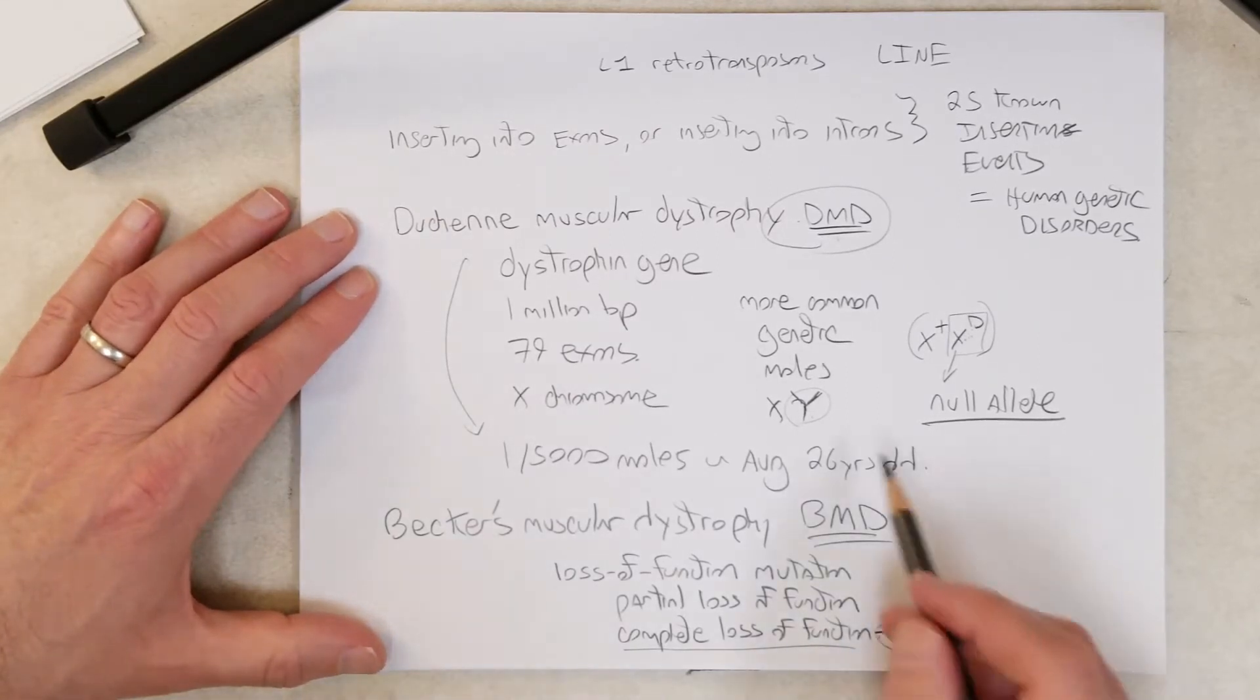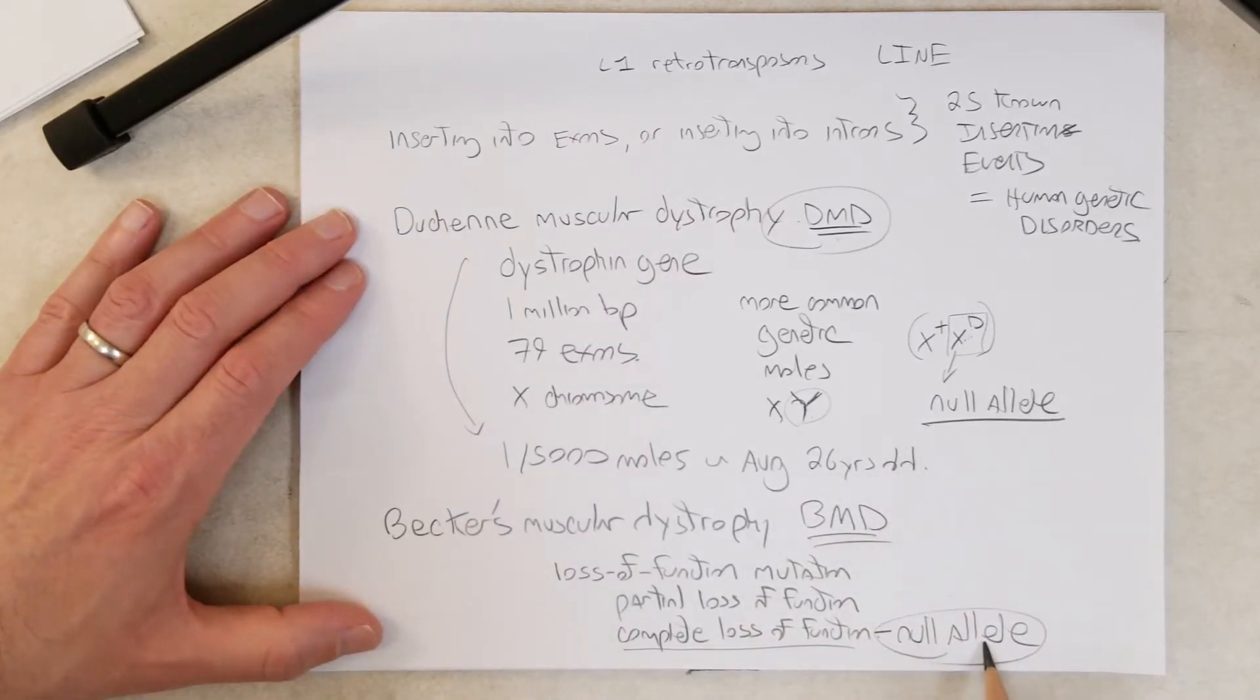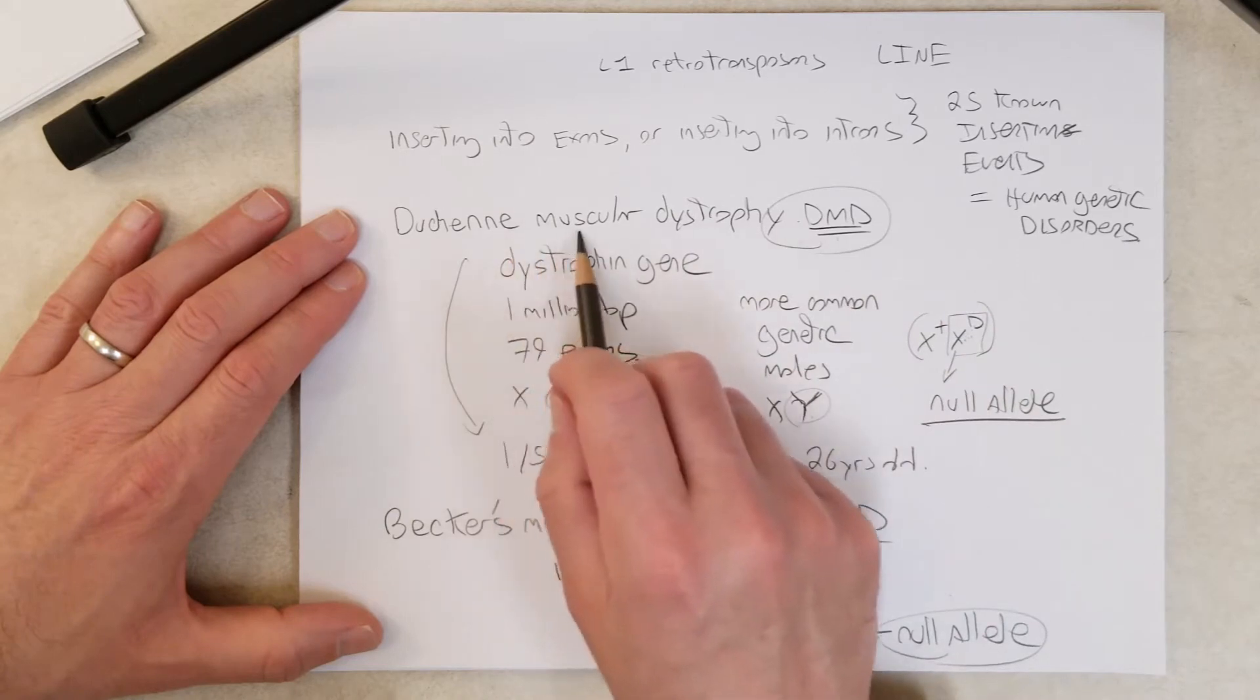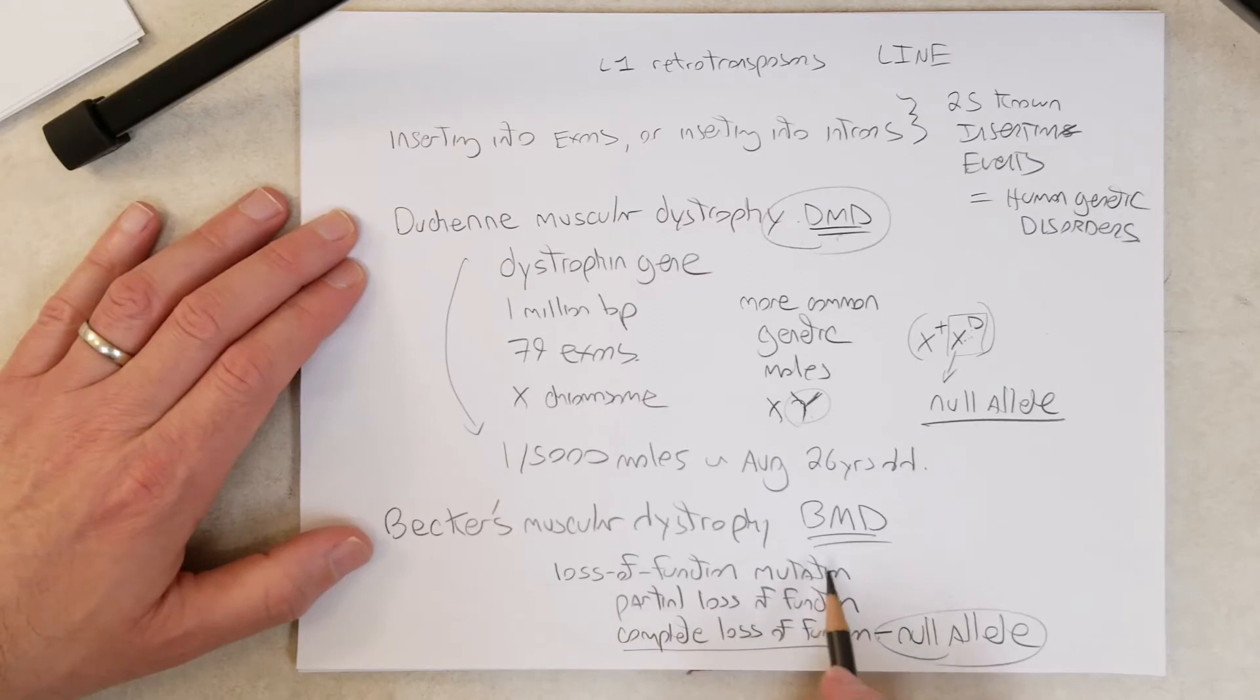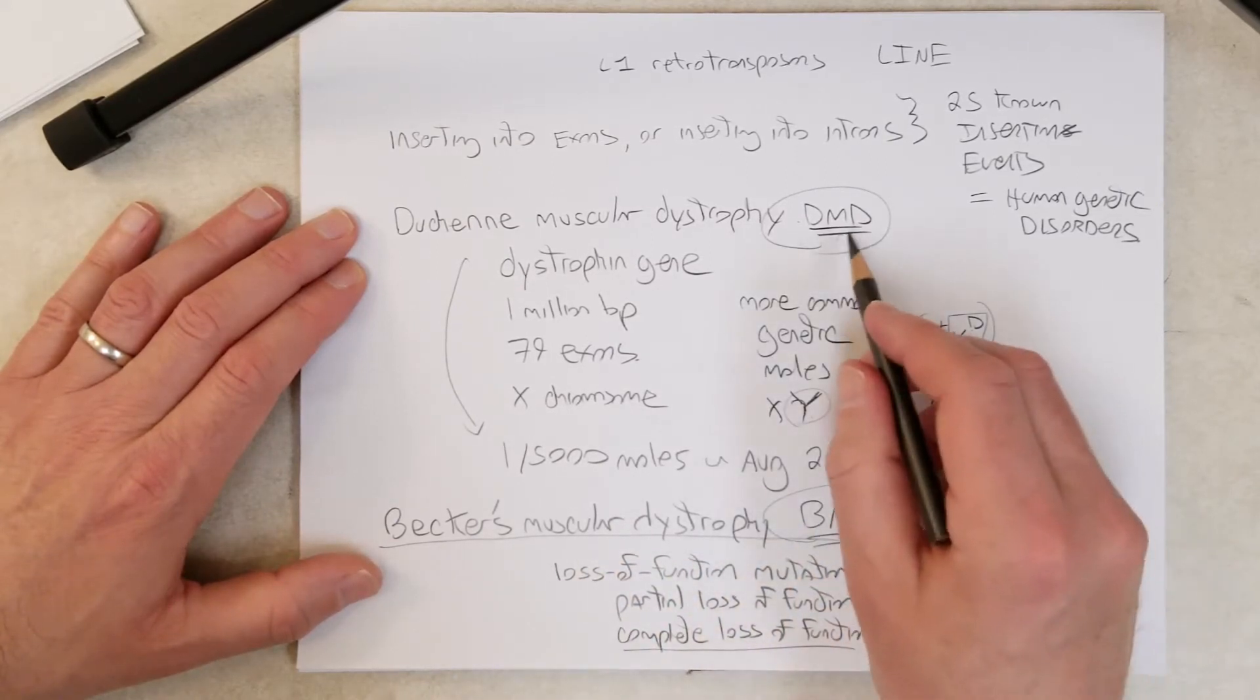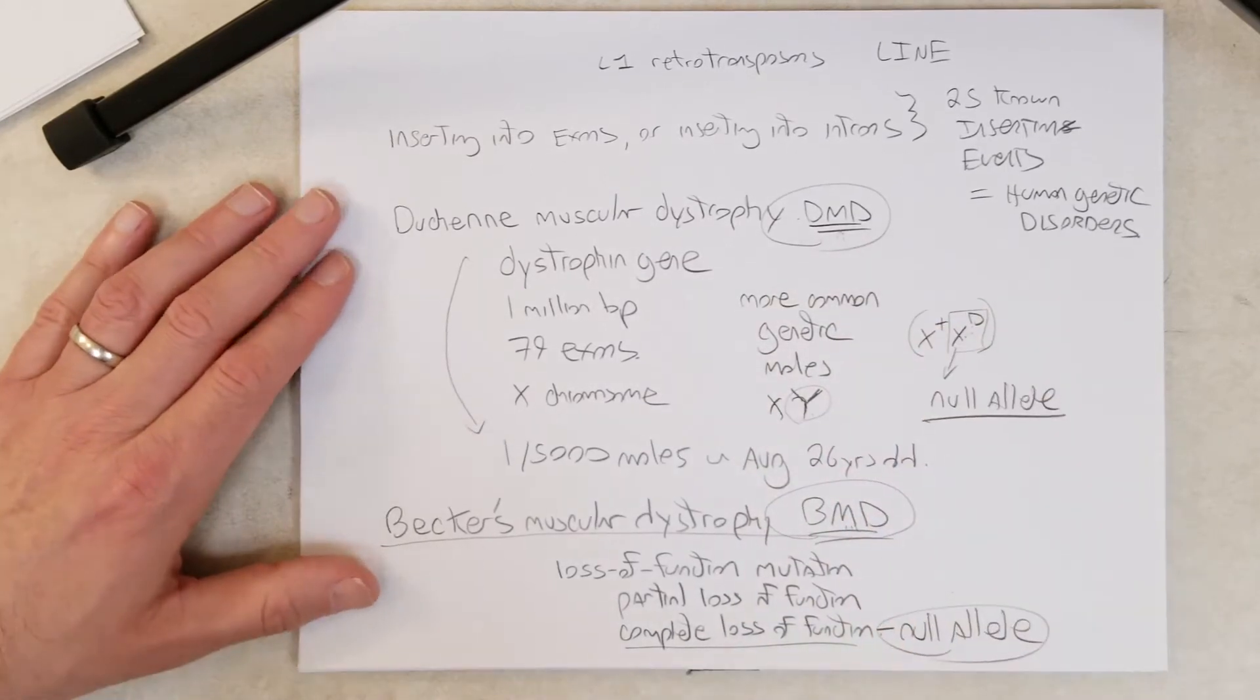If an individual inherits a null allele, Duchenne muscular dystrophy will develop. If the individual inherits an allele that's still partially functional, but not wild type, this usually develops Becker's muscular dystrophy. And the prognosis for an individual with BMD obviously is better than for an individual with DMD.